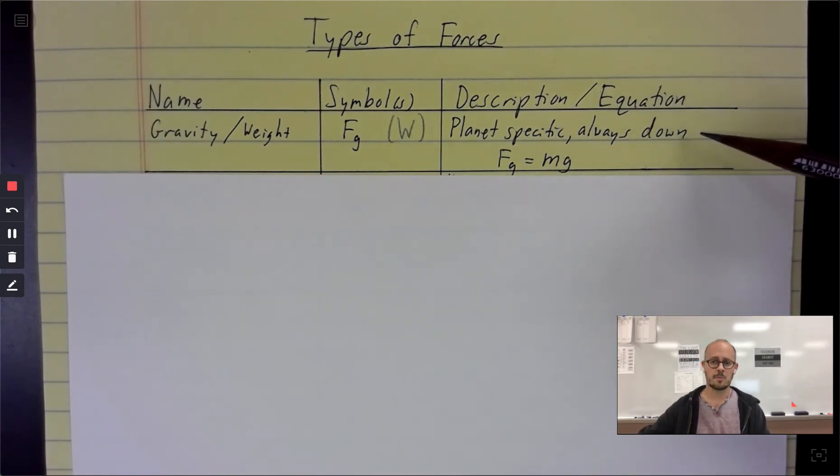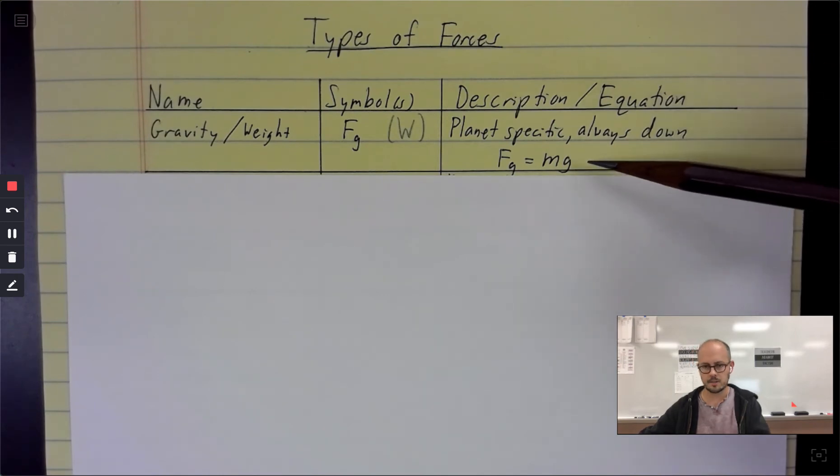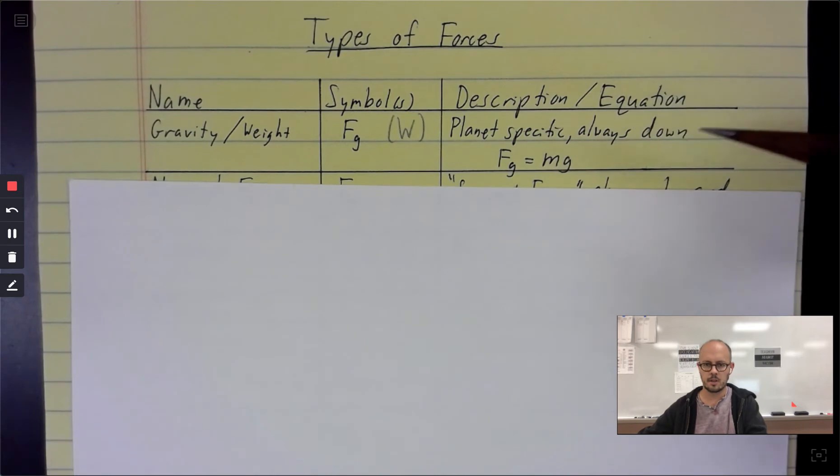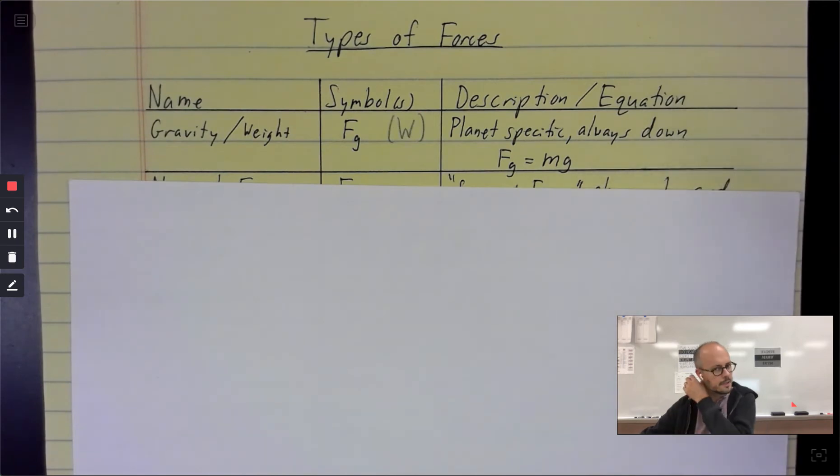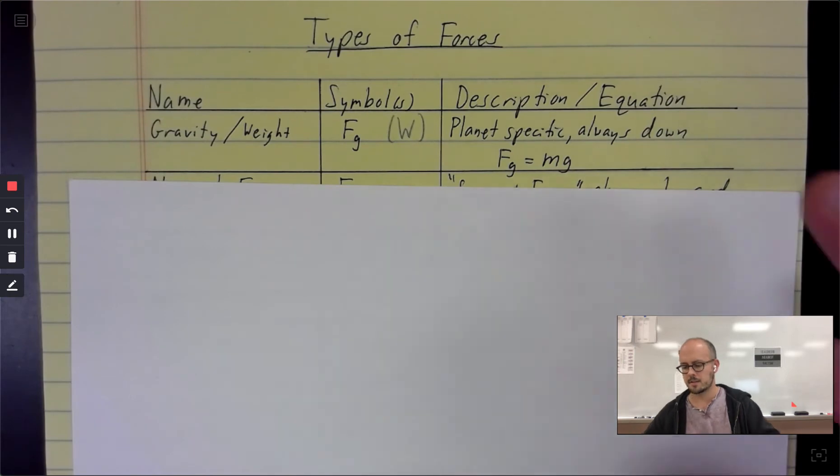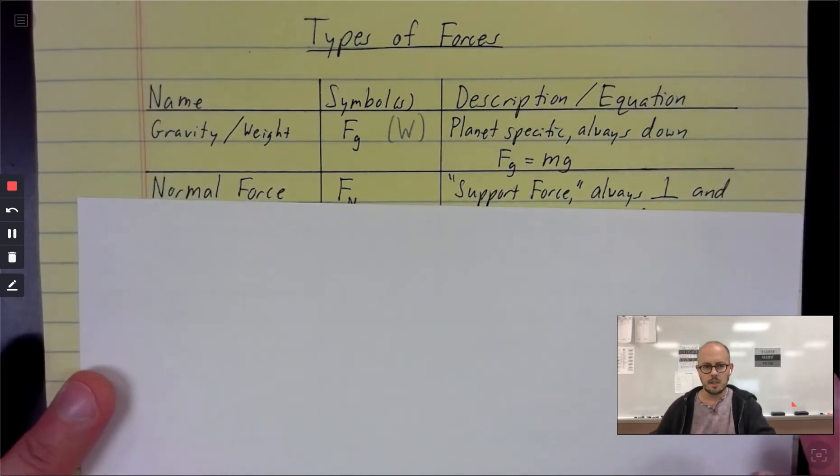It always points down because it always points toward the center of the planet. And then it has an equation. The force of gravity on an object is equal to that object's mass times little g. And so we will separately cover this little equation some other time, but this is one that has an equation for itself.